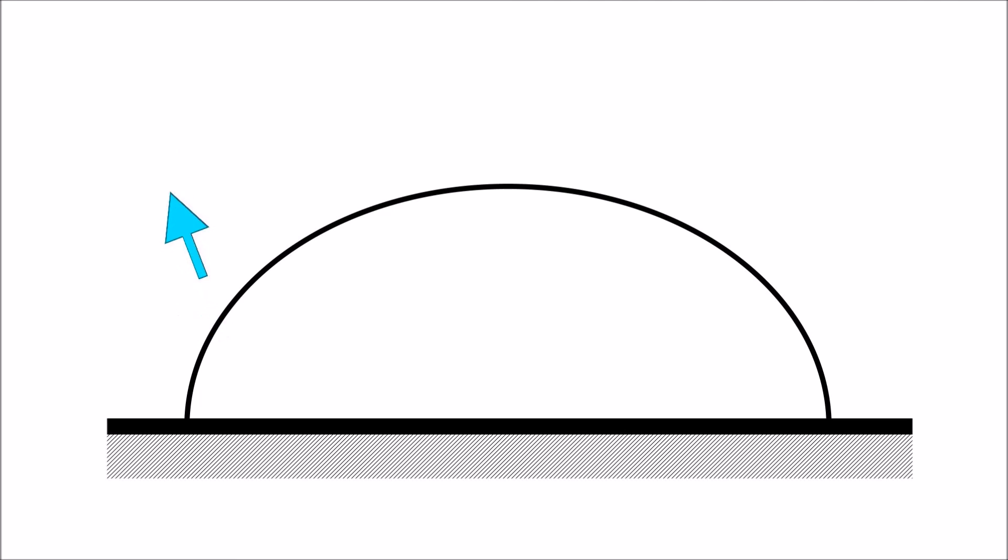Now you know why coffee stains leave a ring at its edge. An outward flow from inside the droplet compensates for the rapidly decreasing height near the edge, carrying the coffee along with it.